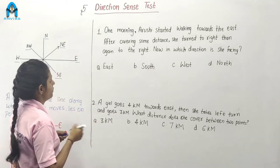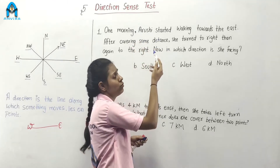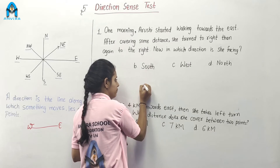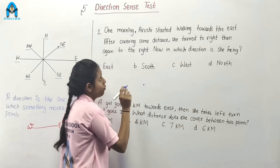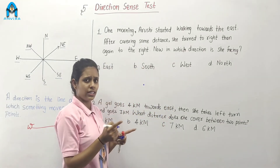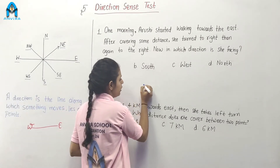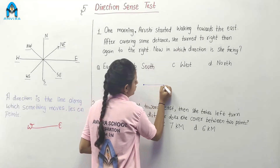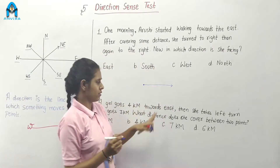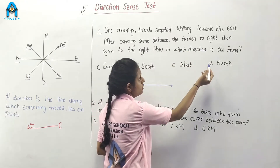Question number 1. One morning, Arushi starts walking. Here is Arushi, and she starts walking towards the east. After covering some distance, she turned to the right.